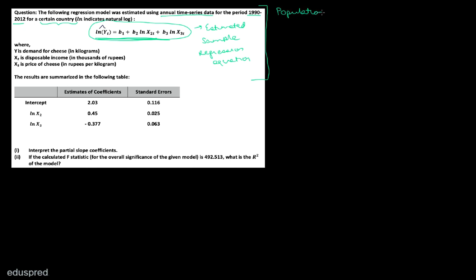The population equation will look something like this: log of Yt equals beta 1 plus beta 2 times log of X2t plus beta 3 times log of X3t plus U, where U is the population error, and beta 1, beta 2, beta 3 are the population parameters.